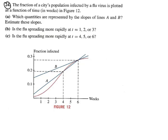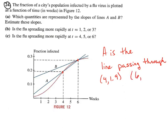Okay, so if we look at line A, we can notice that it's a secant line going through the two points, 4 about 0.19 and 6 maybe 0.28. So A, this A is the line passing through the points 4, 1.9, I'm just approximating that, and 6, 2.8.